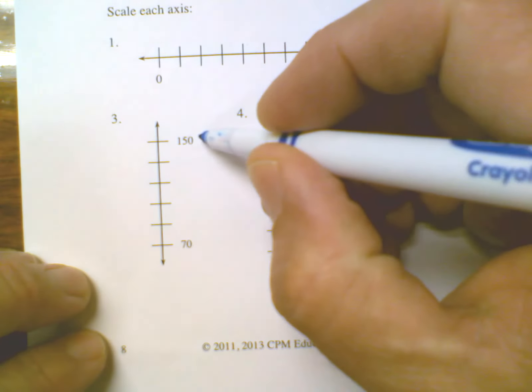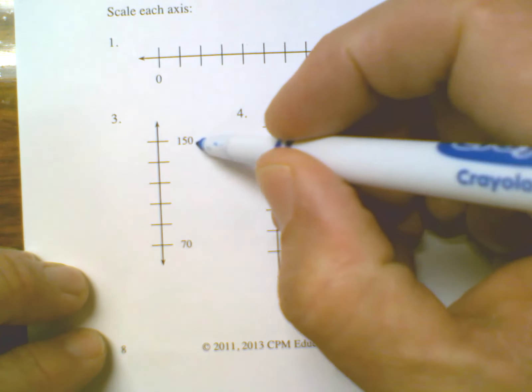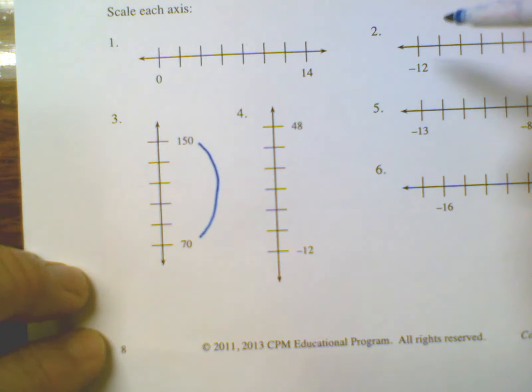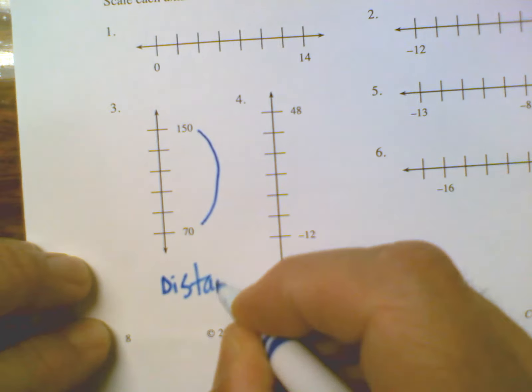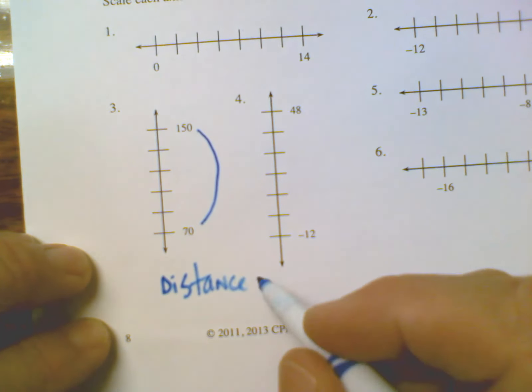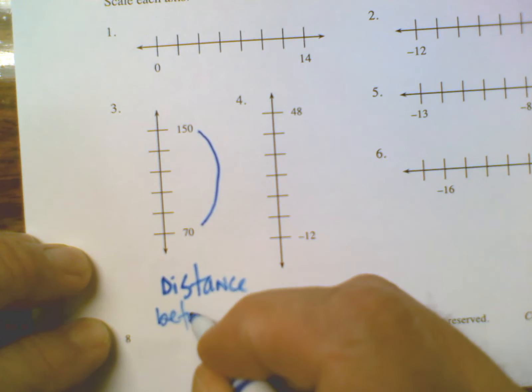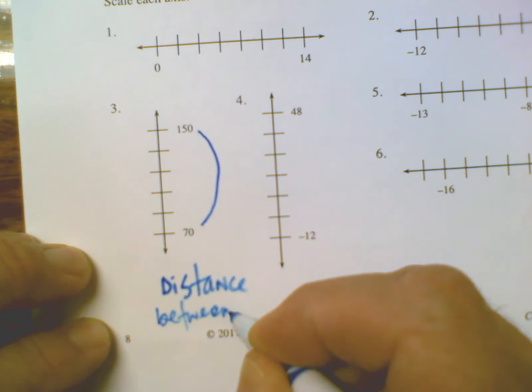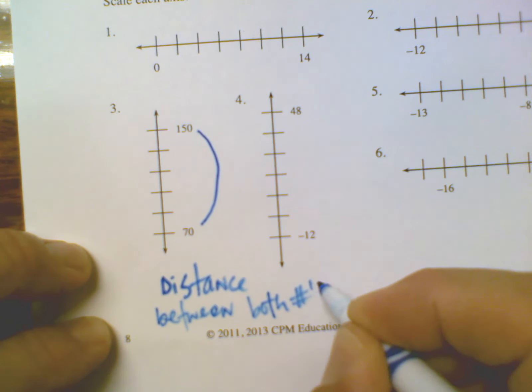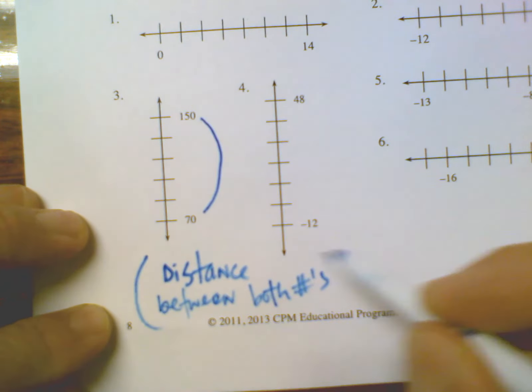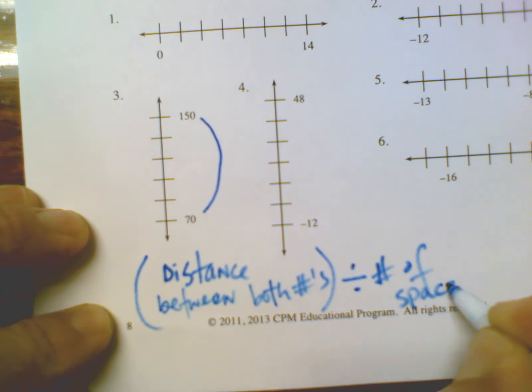It's always finding the distance between start and finish, or both numbers. Once we know that distance, then we take that number and divide by the number of spaces. That gives us our increments that we're going to be using.